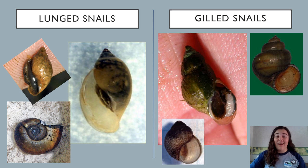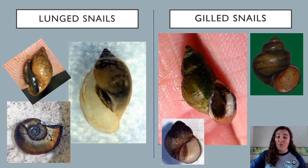Now I'm going to tell you the difference between lunged and gilled snails, which are the two types of snails that we look at during stream assessments. Lunged snail shells open to the left and gilled snail shells open to the right. You can remember it because both lunged and left begin with L. So if you find a snail, here's how you figure out which type it is: you place it in your hand with the pointy part of the shell facing upward, then look to see which side the shell opens to. If it opens to the left, you found a lunged snail; if it opens to the right, you found a gilled snail.